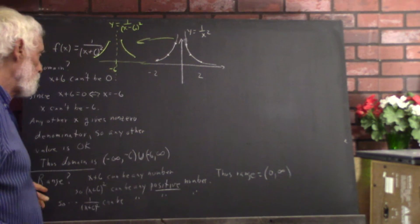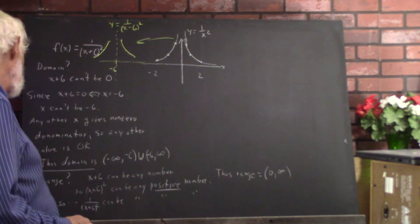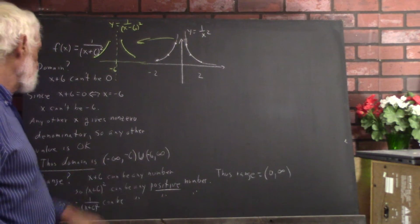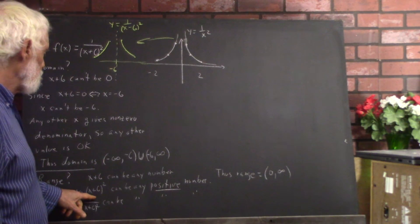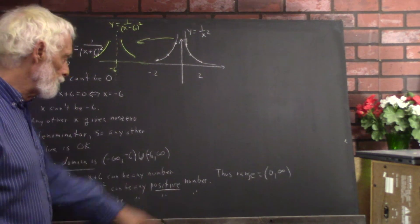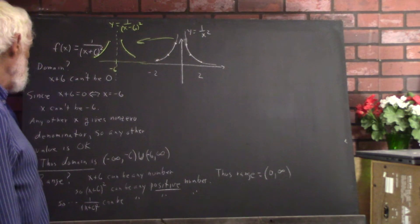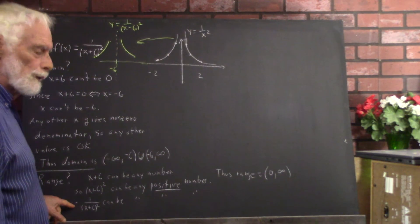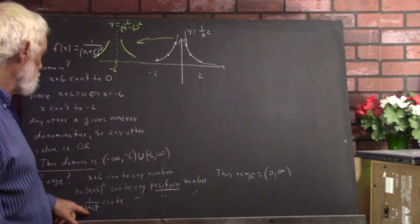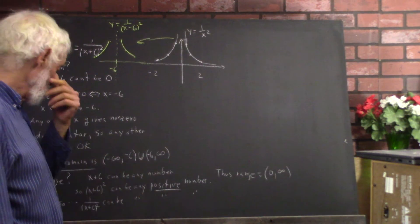So what's the range? Well, x plus 6 can be any number. So if you square x plus 6, it can be any positive number. It follows then with a little argument that the reciprocal of x plus 6 squared can be any positive number.